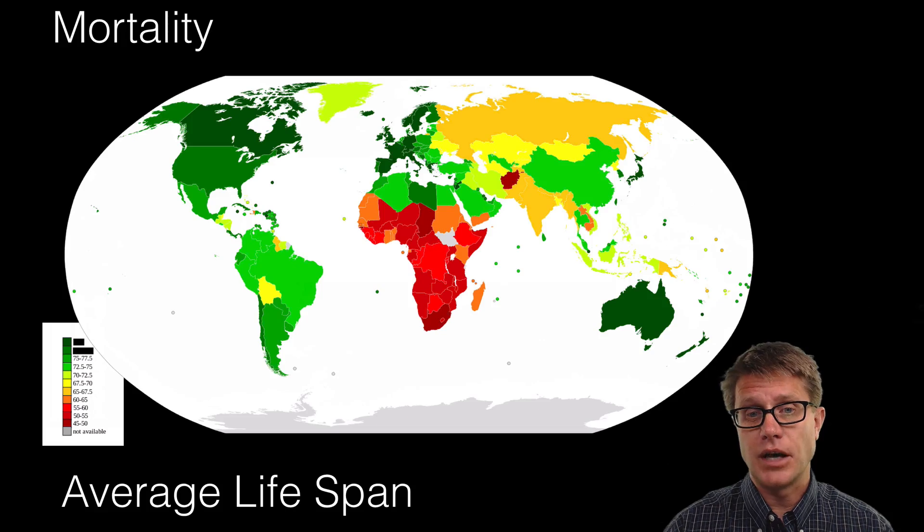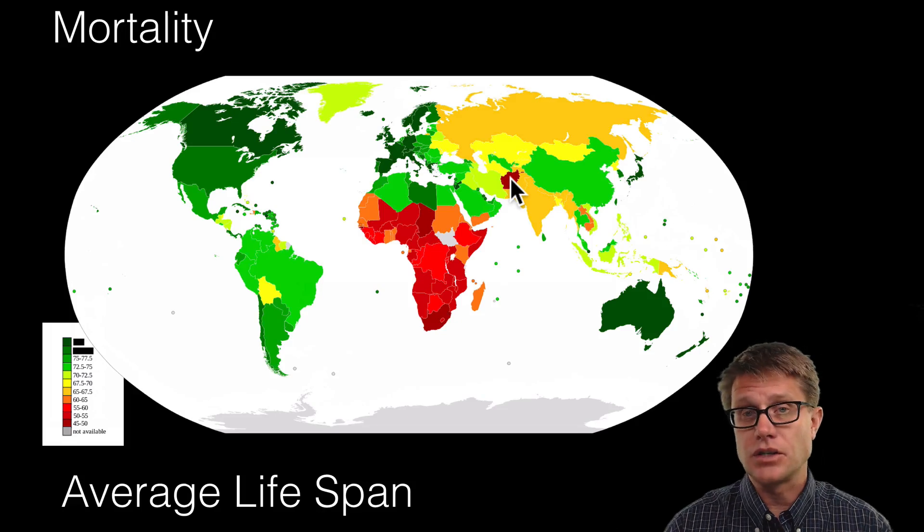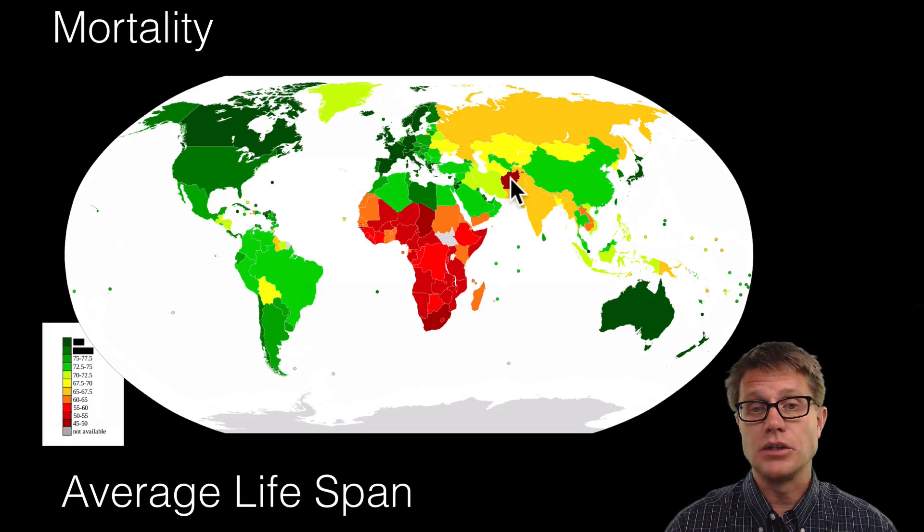So if we look at the average lifespan in different countries, in a lot of sub-Saharan Africa that is going to be really low. Like in Afghanistan it is going to be the average person only living between 45 and 50. Now disease, war can contribute to that.